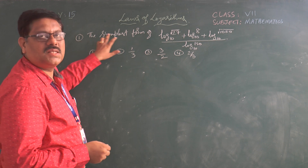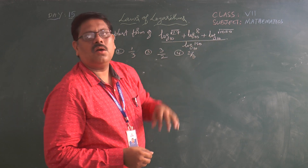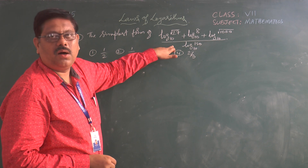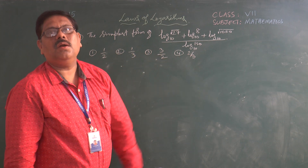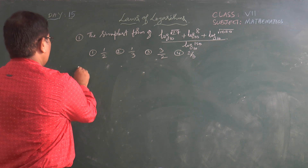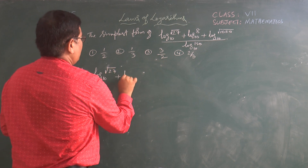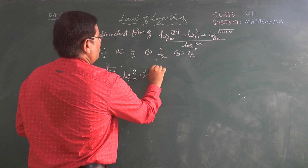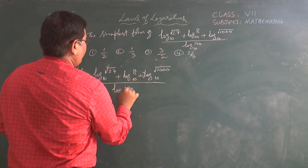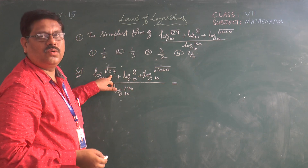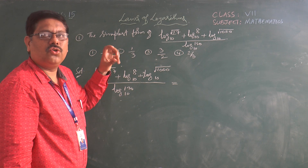If you look at the first question: find the simplest form of log√27 to the base 10, plus log 8 to the base 10, plus log√1000 to the base 10, upon log 120 to the base 10. We are given four options: 1/2, 1/3, 3/2, and 2/3. Let us solve it. The given expression is log√27 to the base 10 plus log 8 to the base 10 plus log√1000 to the base 10 upon log 120 to the base 10. Since 27 = 3³, √27 = 3³ to the power of 1/2.